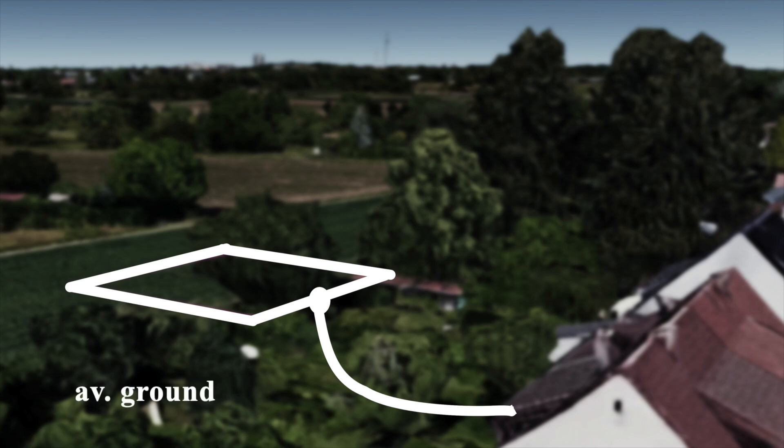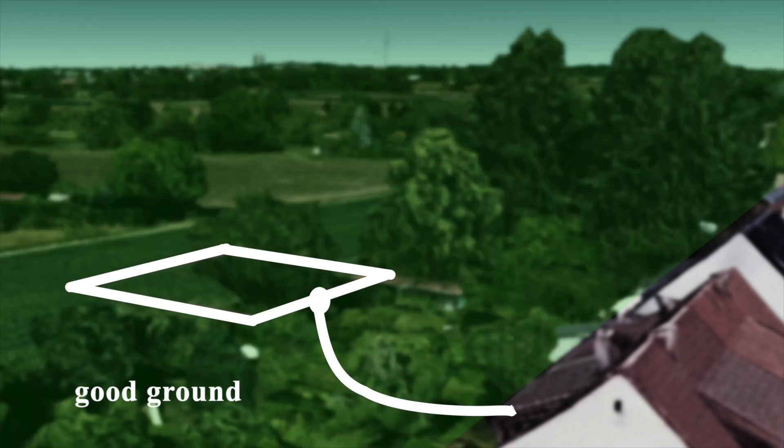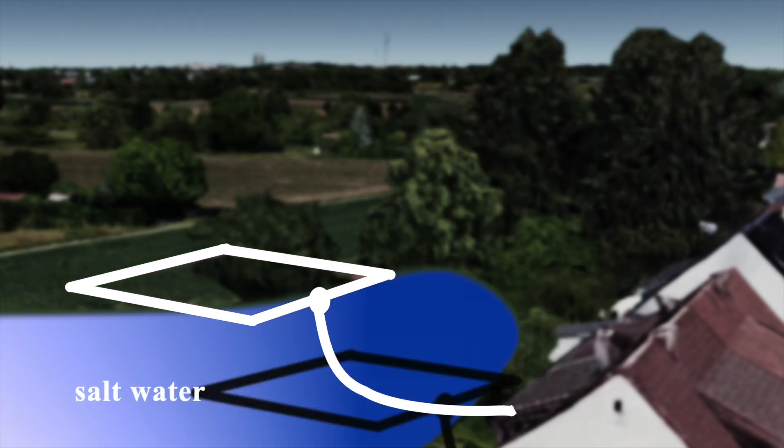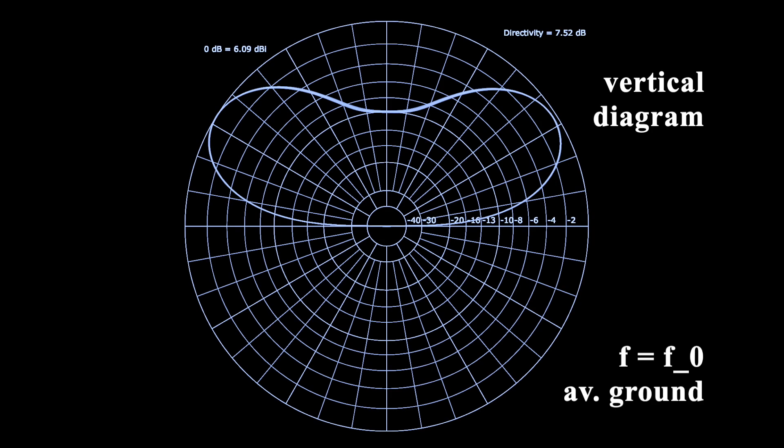We can simulate different ground conditions using NEC. Options are average ground, poor ground, good ground, perfect ground, salt water and fresh water. We carried out the previous calculations with average ground and now we are comparing them to the other conditions.